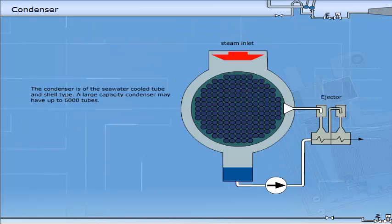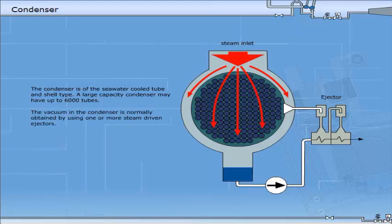The condenser is of a seawater-cooled tube and shell type. A large-capacity condenser may have up to 6,000 tubes. The vacuum in the condenser is normally obtained by using one or more steam-driven ejectors. By lowering the vacuum, one may pull more power out of the turbine. But on the other hand, the temperature of the condensate will also be lower, and the total plant efficiency will be reduced.